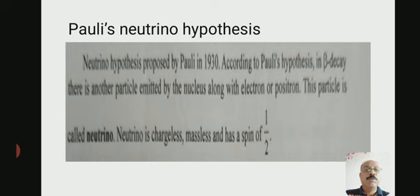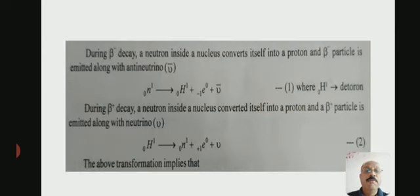Pauli's neutrino hypothesis was proposed in 1930. According to Pauli's hypothesis, in beta decay there is another particle emitted by the nucleus along with the electron or positron. This particle is called the neutrino. The neutrino is chargeless, massless, and has a spin of 1/2.